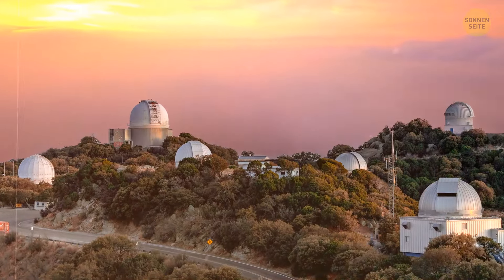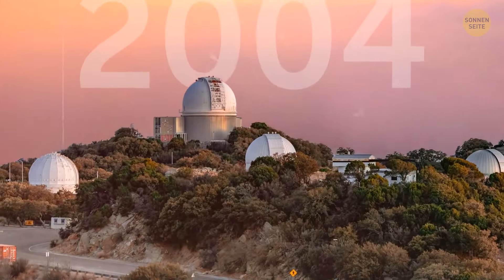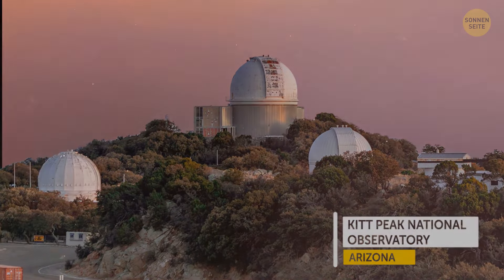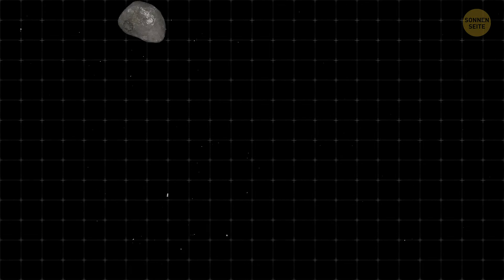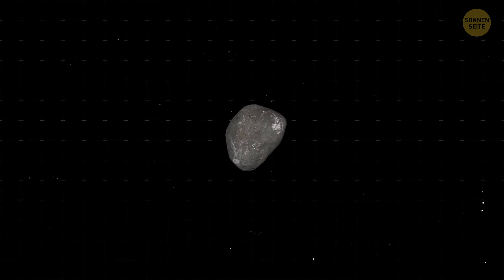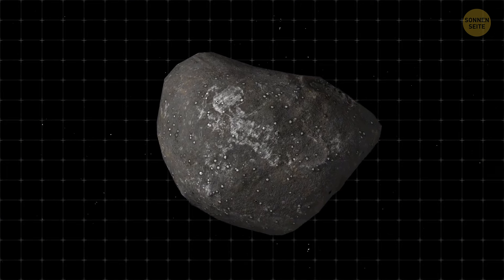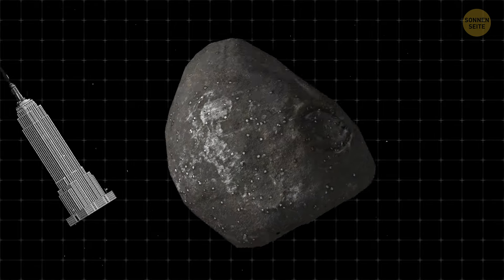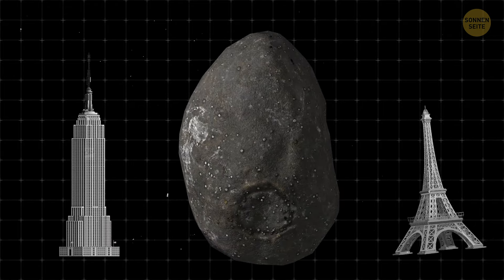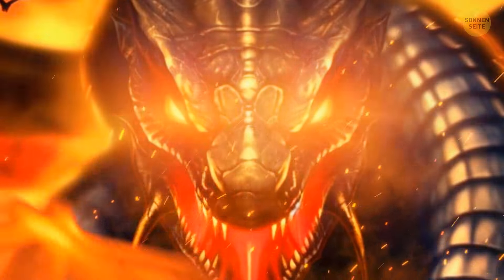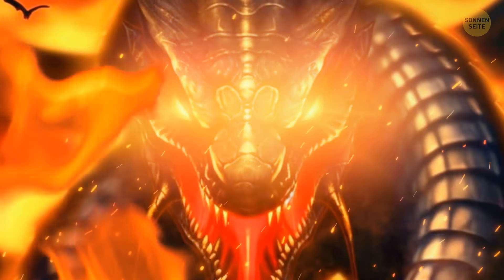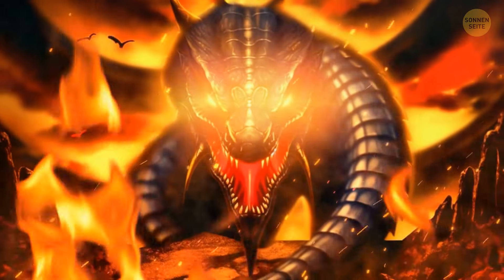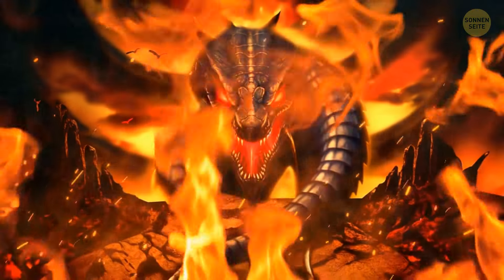Apophis is a big, bad asteroid discovered in 2004 by the Kitt Peak National Observatory in Arizona. Since then, it has proudly held the title of one of the most dangerous asteroids ever located. It's around 1,100 feet wide, which is a bit bigger than the Empire State Building and the Eiffel Tower. Because of how scary it is, it was named Apophis, like the Egyptian immortal creature that was considered to bring eternal darkness and destruction to Earth.